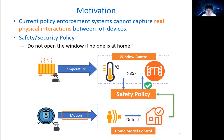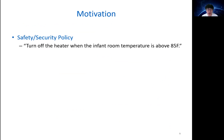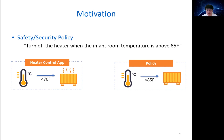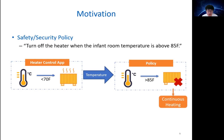Such a physical interaction cannot be identified by static analysis. The current policy enforcement system also ignores continuous effects of physical interactions, which may lead to missed or delayed enforcement. For example, in an infant room, a heater control app turns on a heater when the temperature is below 70 degrees. The user sets a safety policy turning off the heater when the temperature exceeds 85 degrees. However, even after turning off the heater, it can still keep heating for a while and the high temperature situation will continue. The low reporting rate of current smart home sensors makes such situations even worse, leading to missed or delayed policy enforcement.